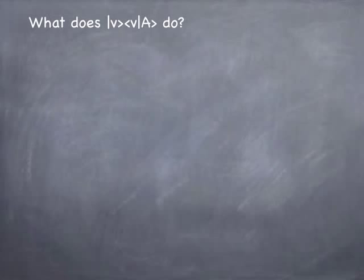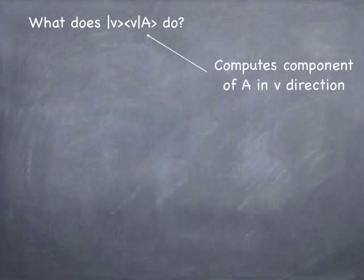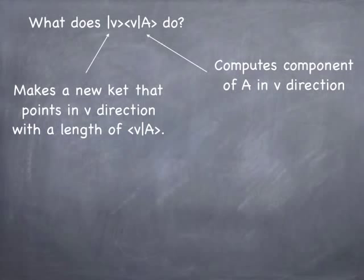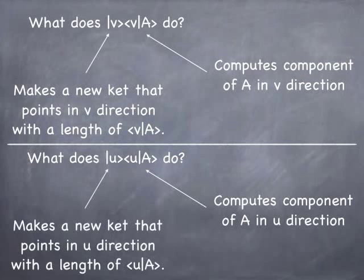So what's it all for? There's one other thing I want to touch on: projection. What does the operator ket v times bra v acting on a do? That's called a projection operator because v on a calculates the component of a in the v direction, and multiplying back by the ket v gives a new ket pointing in the v direction with a length of v on a — that's the projection of a onto the v direction. When you make a bra and a ket and stick them together backwards, you don't get a number; you get an operator called a dyad, which projects an arbitrary vector onto the v direction. Generally, the vectors used to build these projection operators are unit vectors, typically basis vectors. Similarly, I could do the same thing with u to calculate the projection of a onto the u direction.